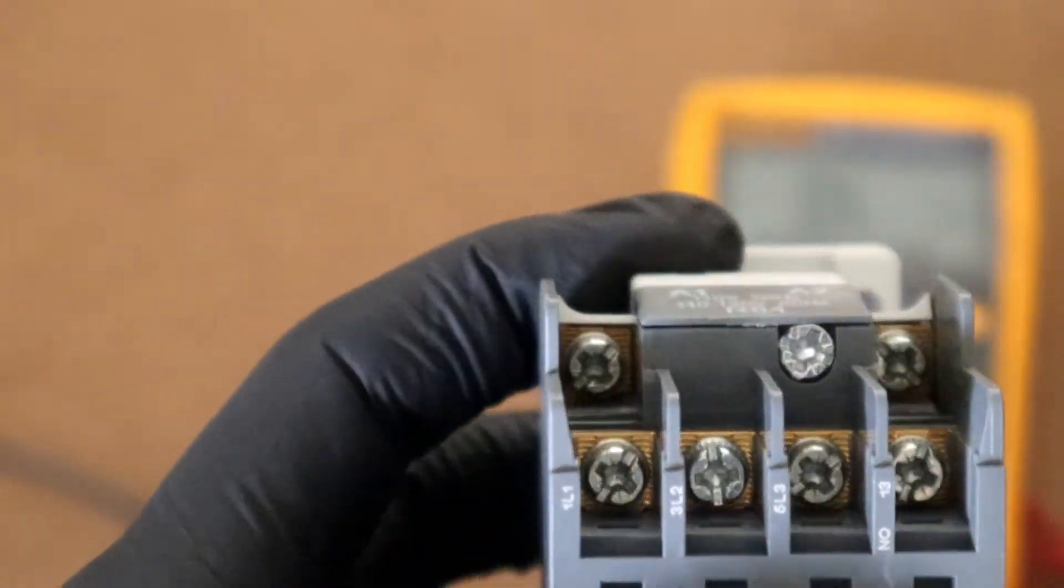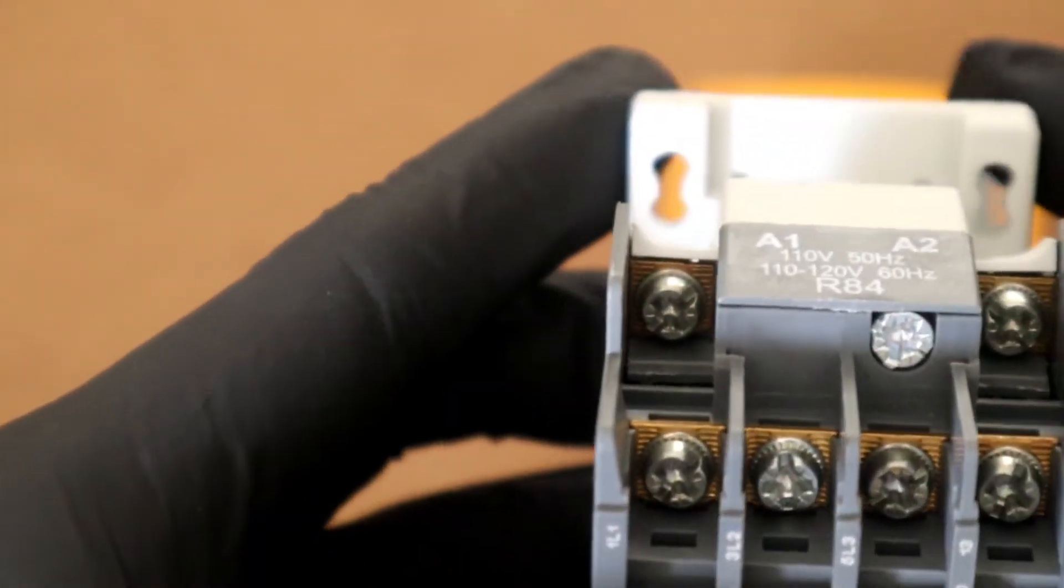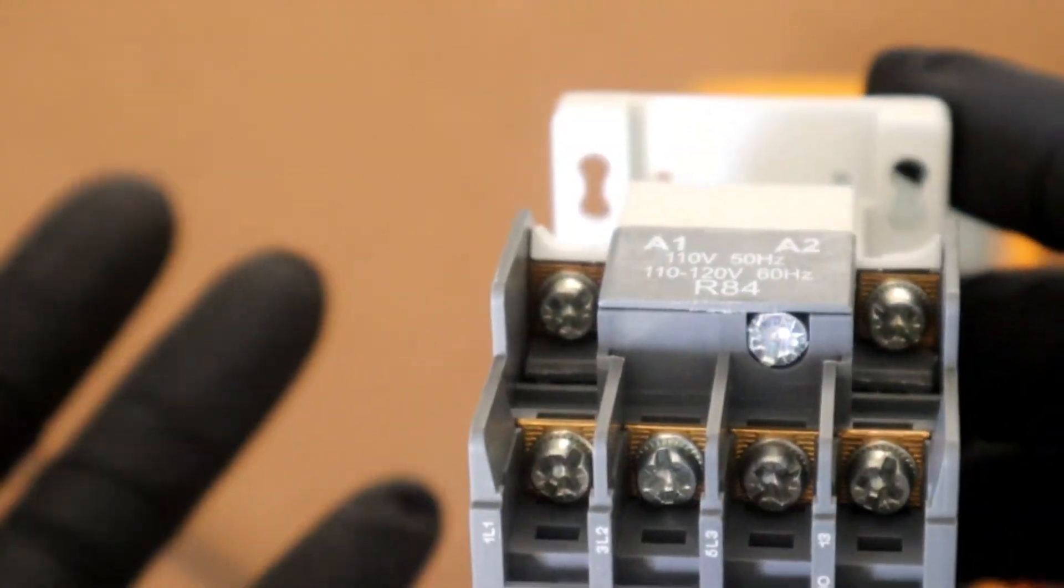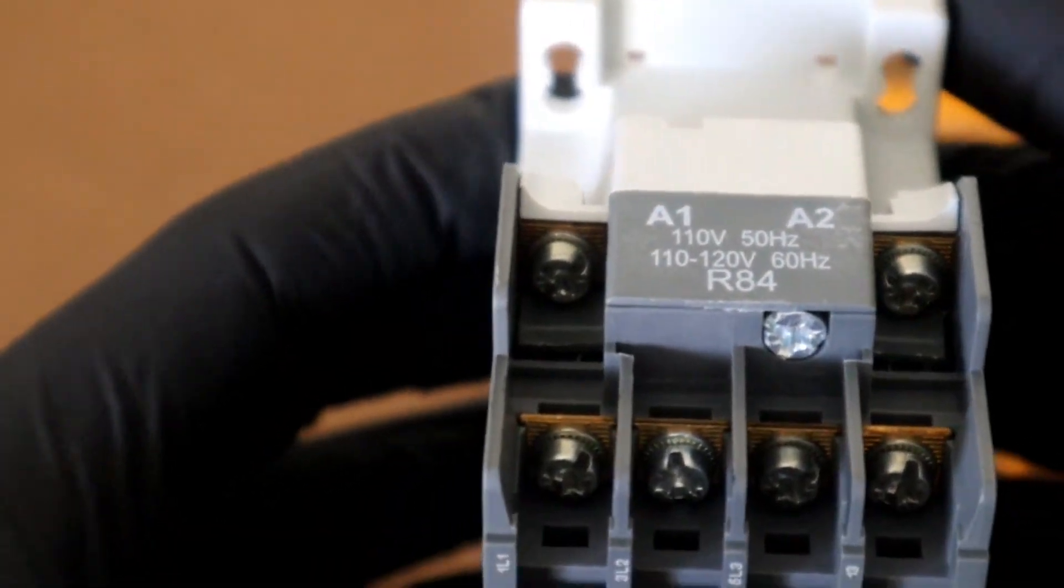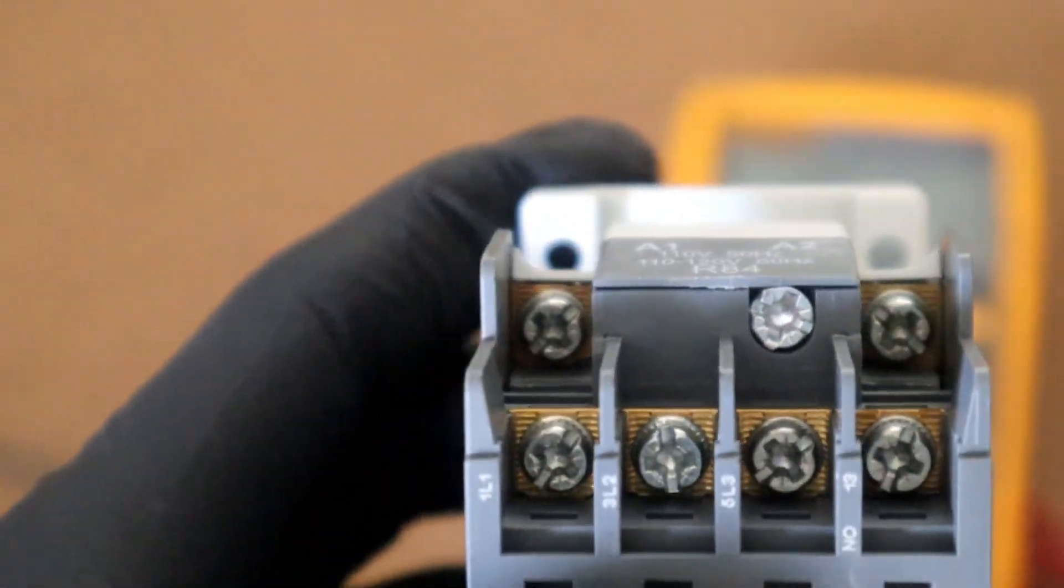If we should test and we get a moderate or low resistance value, then that would indicate that the coil is capable of conducting electricity. That means that the coil is still intact and it should work as the manufacturer specifies it to work.